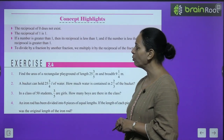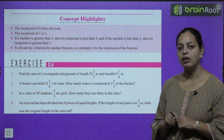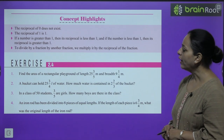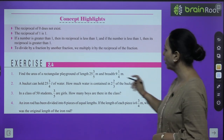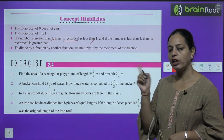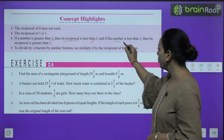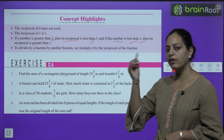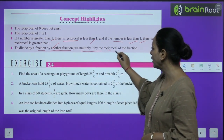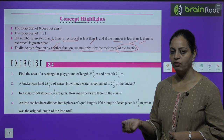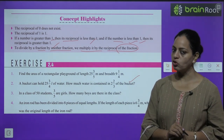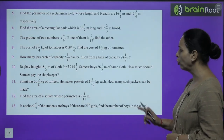Concept highlights: the reciprocal of 0 does not exist. The reciprocal of 1 is 1. If a number is greater than 1, its reciprocal is less than 1; if a number is less than 1, its reciprocal is greater than 1. To divide a fraction by another fraction, multiply by the reciprocal of the second fraction. Exercise 2.4 is based on such questions.